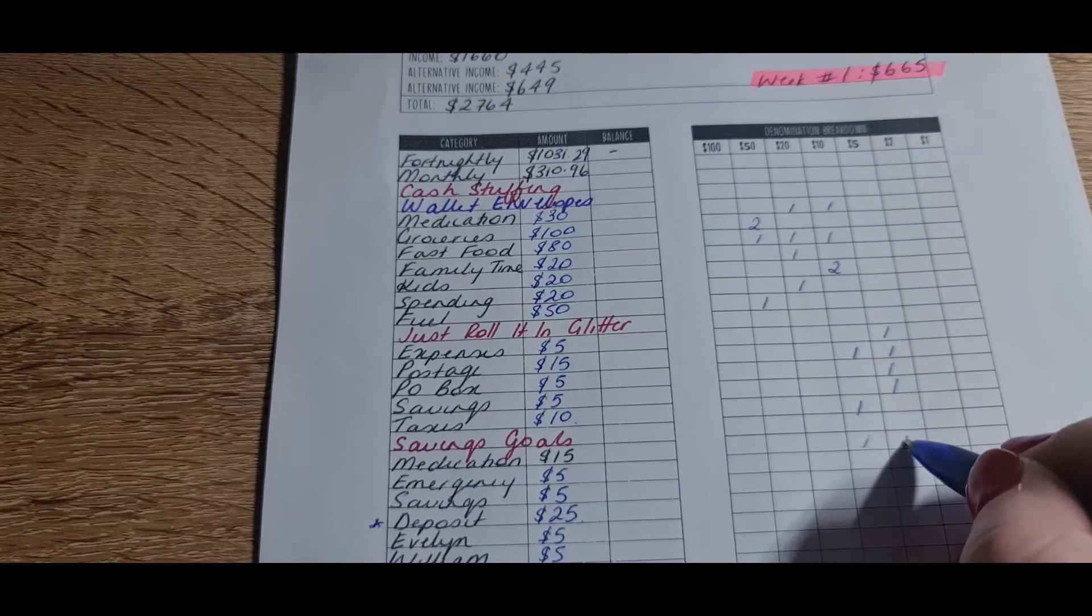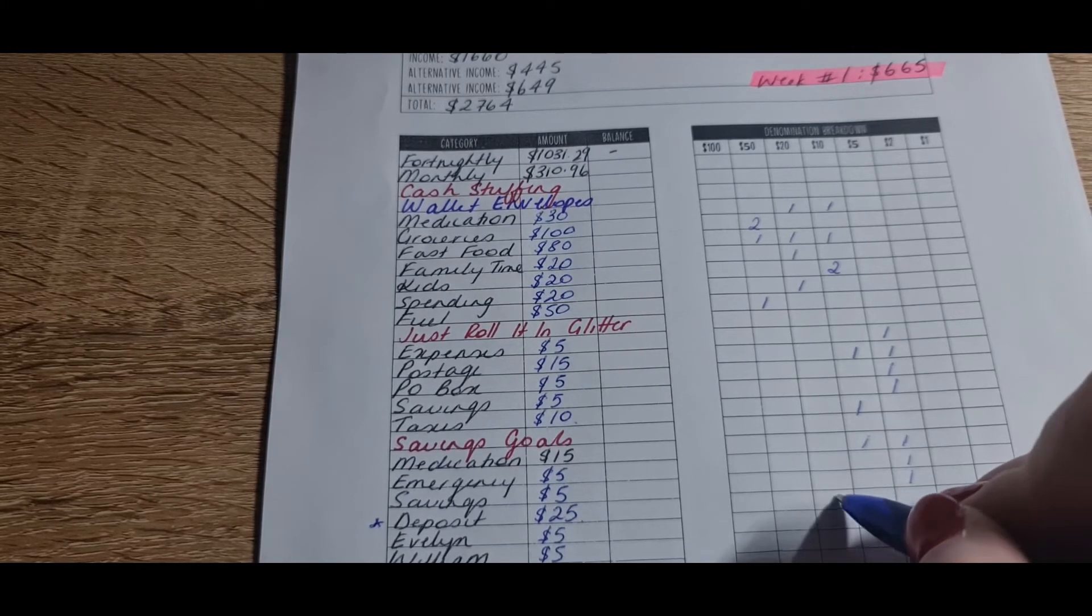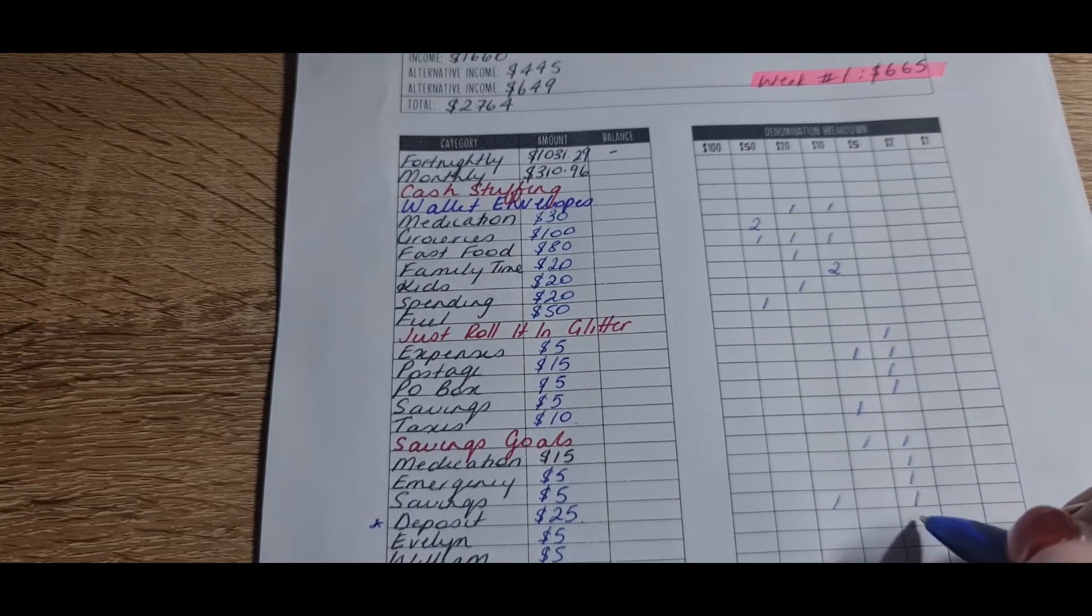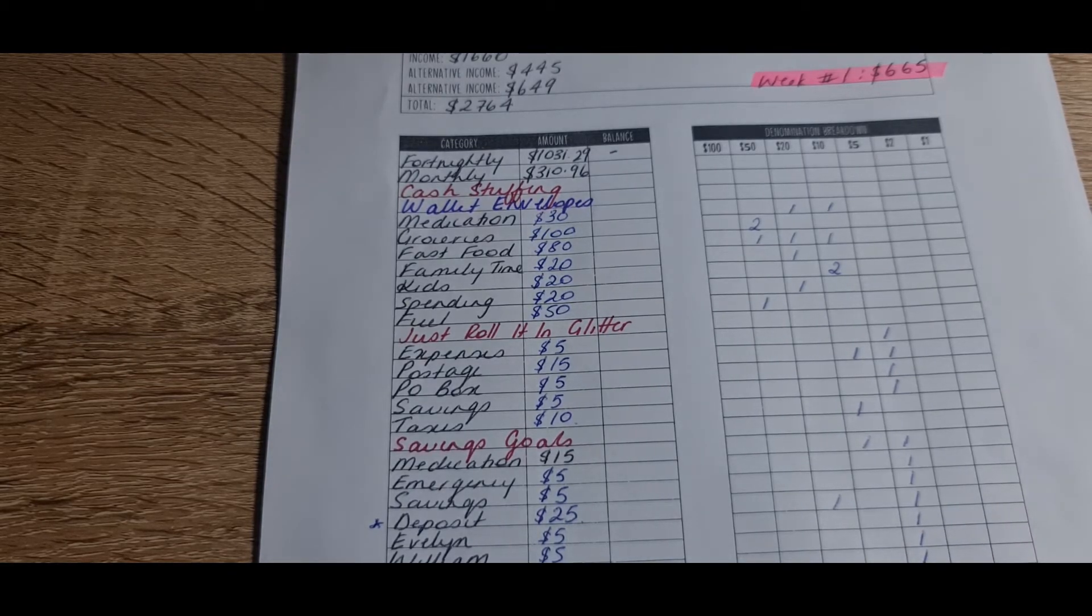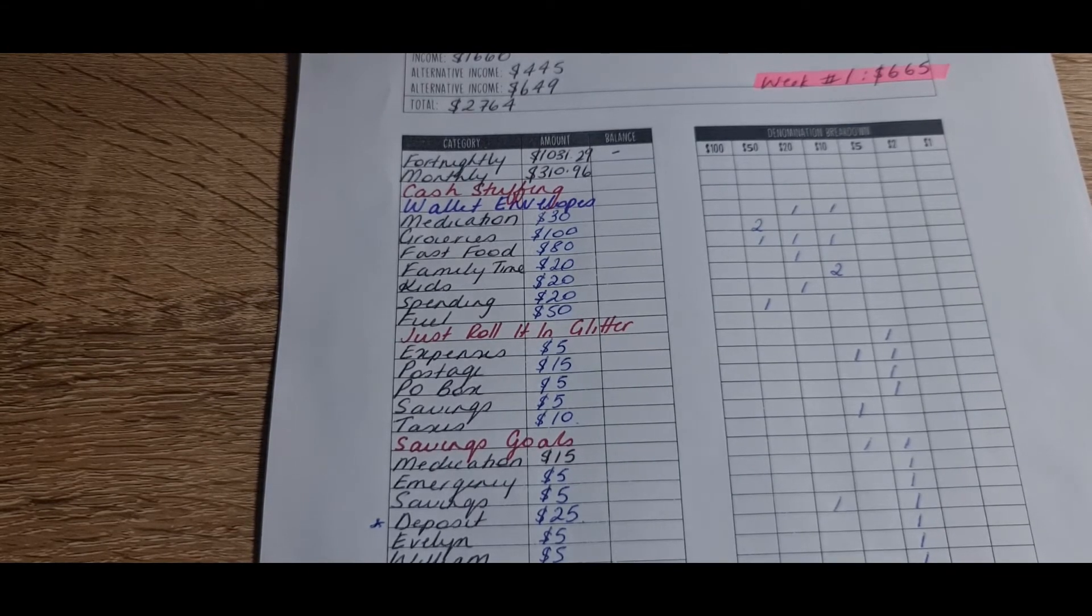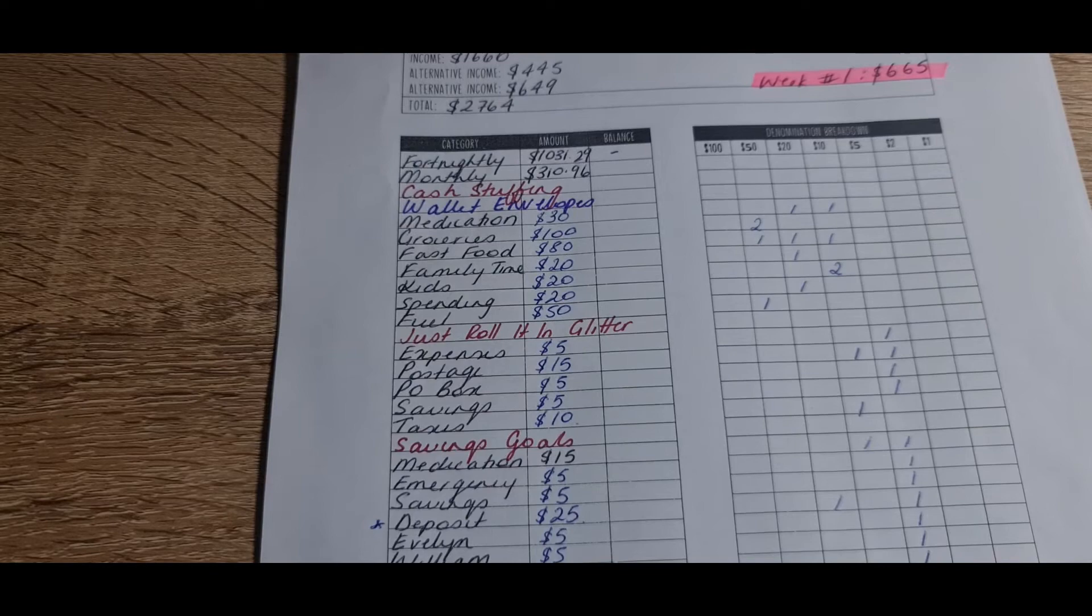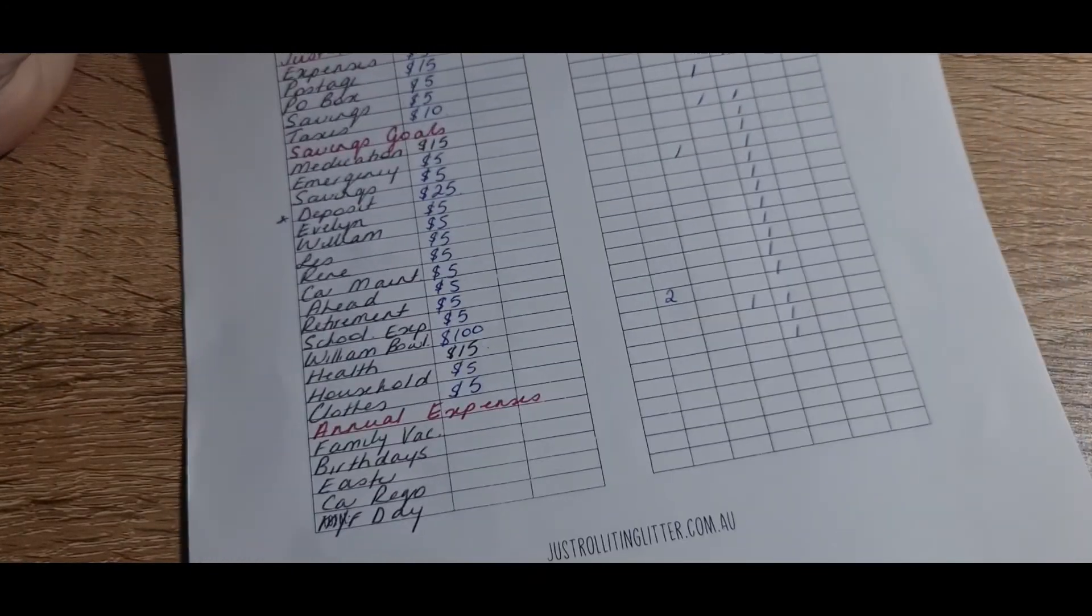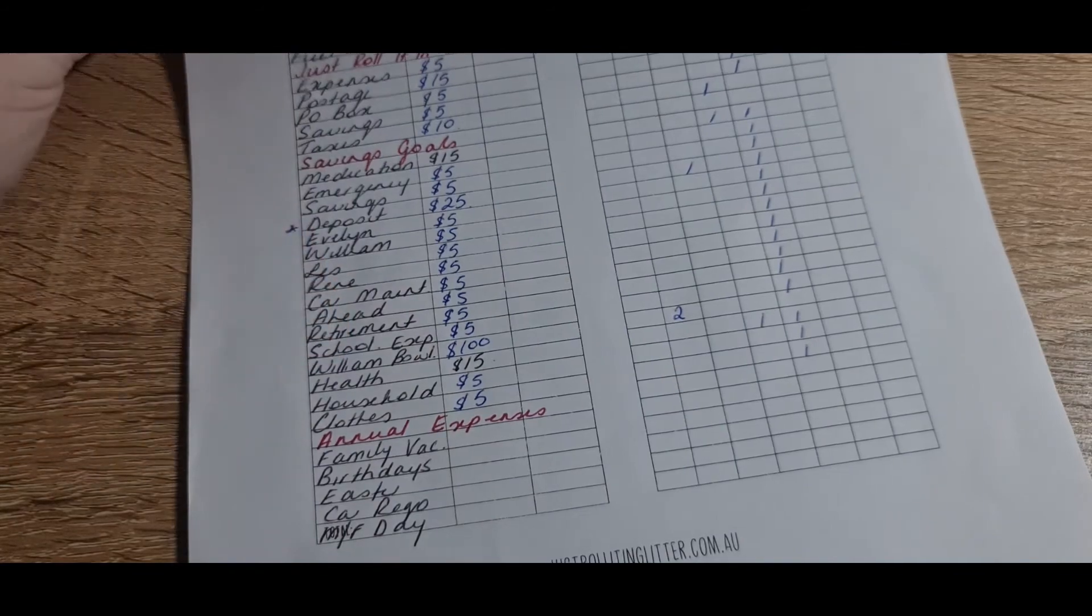So back over here. Medication is getting a $10 and a $5. Emergency, $5. Savings, $5. Deposit is getting a $20 and a $5. Evelyn, $5. William, $5. Les, $5. Me, $5. Car maintenance, ahead, retirement, school expenses. It's getting William's getting two $50s. That's getting a $10 and a $5. Household, $5, and clothes, $5. So I literally, this is what I do usually. I have one that spans the whole fortnight, but I'm dividing it.